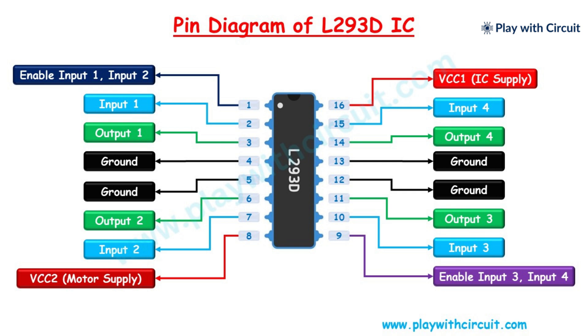Pin 1 and pin 9 are enable pins which are used to control the speed of the DC motor. Pin 2, 7, 15 and 10 are input pins which are used to control the direction of a DC motor.